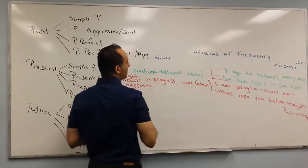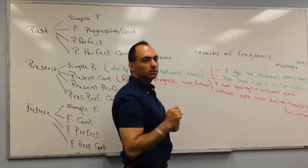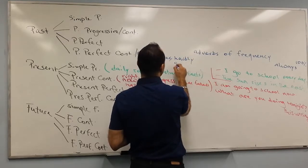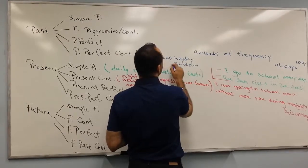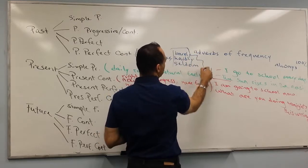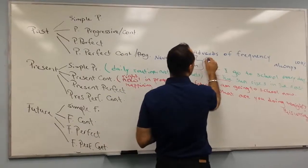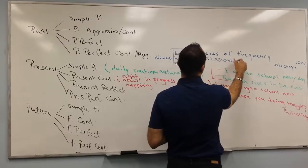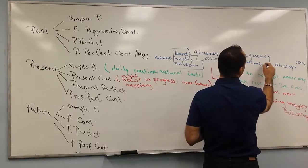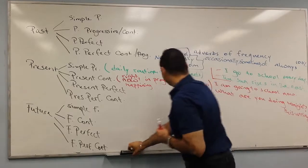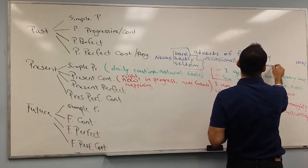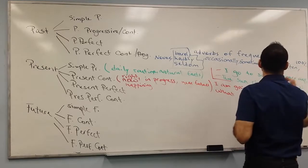After never, I would say hardly, very good - seldom, hardly, seldom, barely. These three are good. After them it would be occasionally. After occasionally, sometimes. After sometimes, usually, often, and always.